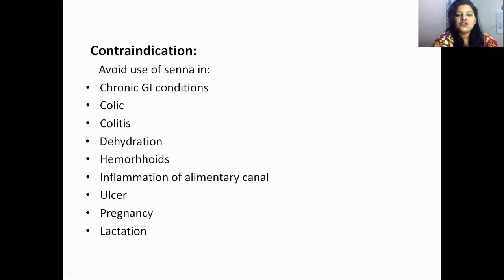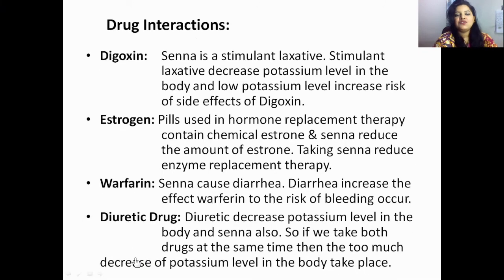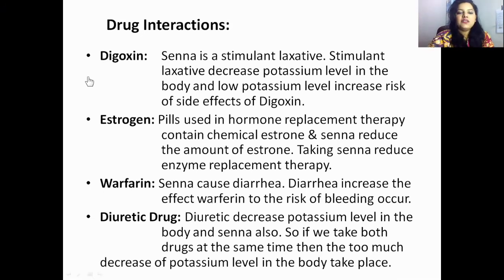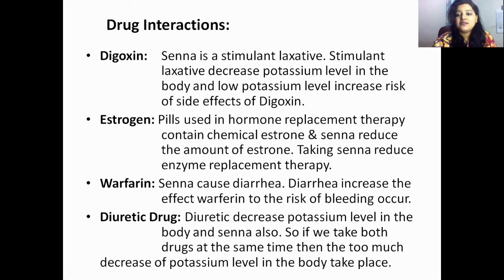Contraindications: avoid use of Senna in chronic GI conditions, colitis, dehydration, hemorrhoids, inflammation of the alimentary canal, ulcers, pregnancy, and lactation. Drug interactions: number one is digoxin. Senna is a stimulant laxative — it decreases the potassium level in the body.